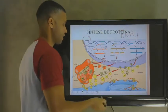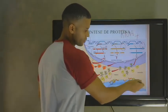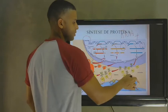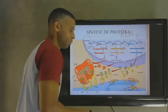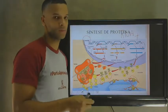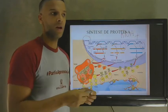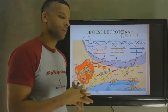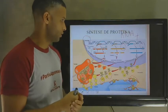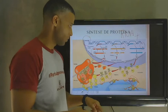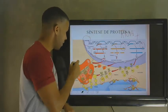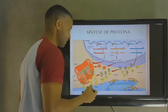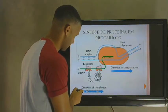Em alguns casos, a leitura do RNA mensageiro vai ser feita pelo ribossomo aderido ao retículo endoplasmático rugoso. Quando isso ocorre, essa proteína que está sendo sintetizada cai no lume do retículo endoplasmático rugoso, forma-se uma vesícula que vai ser mandada pro complexo de Golgi, e aí, no complexo de Golgi, ela vai ser exportada para algum destino no organismo.